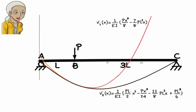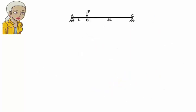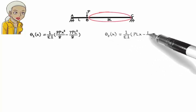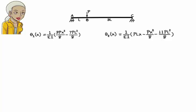Suppose we are asked to determine the location of maximum deflection in the beam. We can do this visually by inspecting the graph of the elastic curve, or more accurately, algebraically using equations V1 and V2. At the point of maximum deflection, the slope of the elastic curve is zero. Maximum deflection occurs either in the left or right segment. If it occurs in the left segment, the point must be located between zero and L. Setting θ1 equal to zero and solving for x, we get x approximately equals 1.53L. Since this is not between zero and L, maximum deflection does not occur in the left segment.